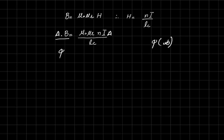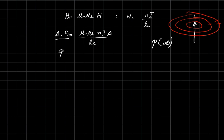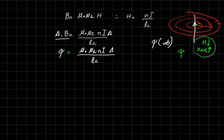Flux is measured in webers and is independent of the radial distance from the conductor. As we move away from a current-carrying conductor, the magnetic intensity H reduces, but 2πr increases, and their product remains constant — that product is the flux. So flux Φ equals mu-naught times mu-r times N times I times the area of the core, divided by the length of the core.